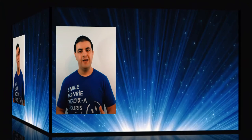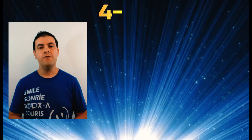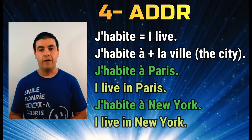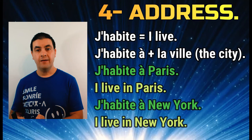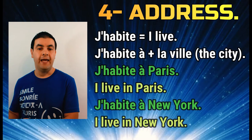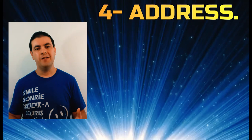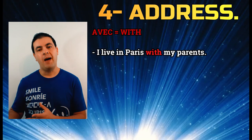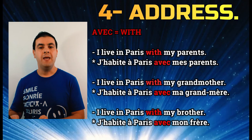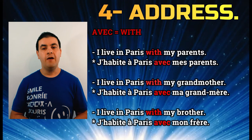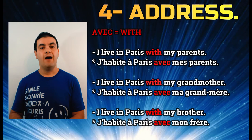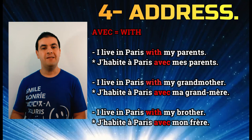Part four is how to say where you live. We use the verb 'j'habite,' which means 'I live.' You say 'j'habite à' and then the name of the city. So you say 'j'habite à Paris' or 'j'habite à New York.' You can add more expressions to make the sentence richer, for example: 'j'habite à Paris avec mes parents' — I live in Paris with my parents — or 'j'habite à Paris avec mon frère' — with my brother.